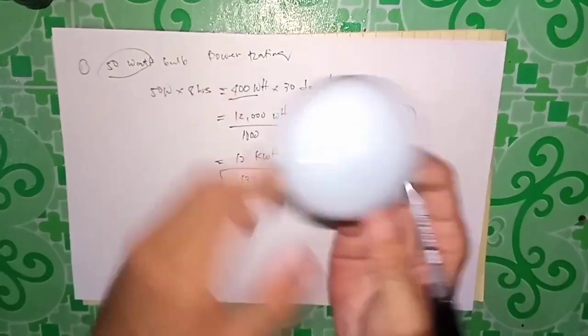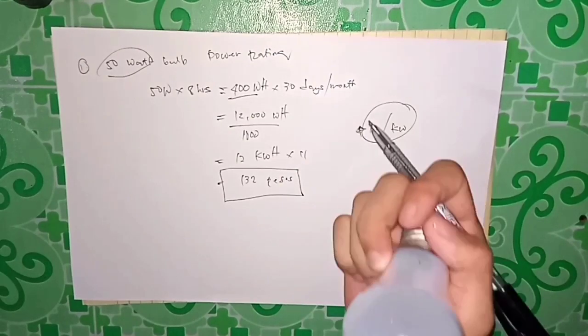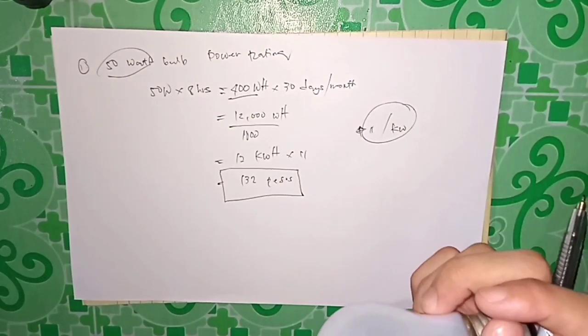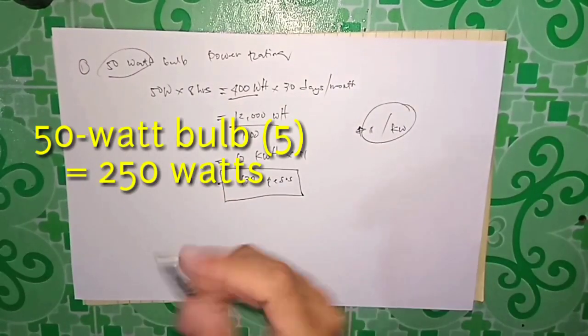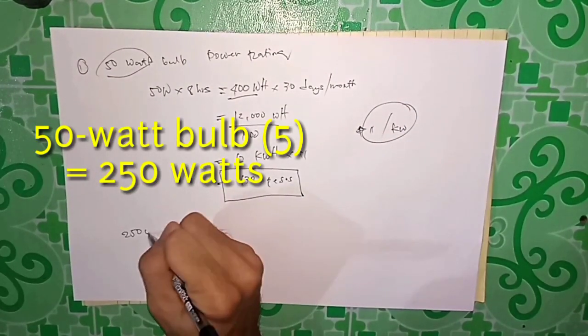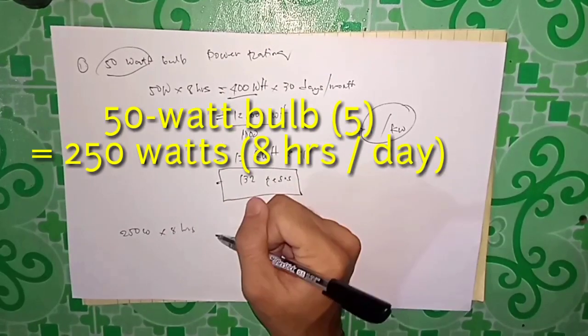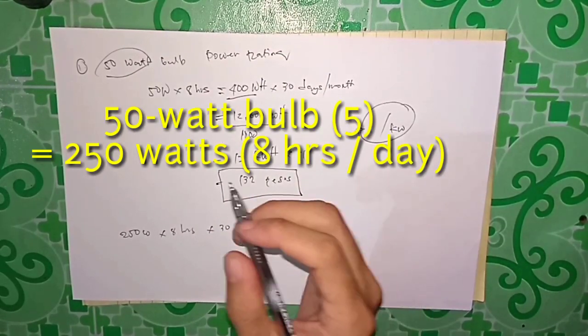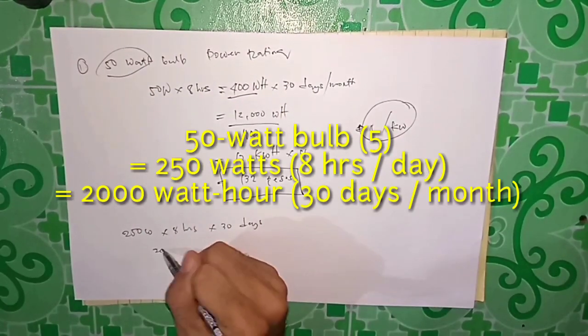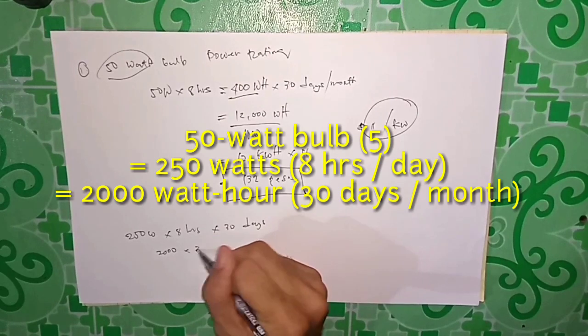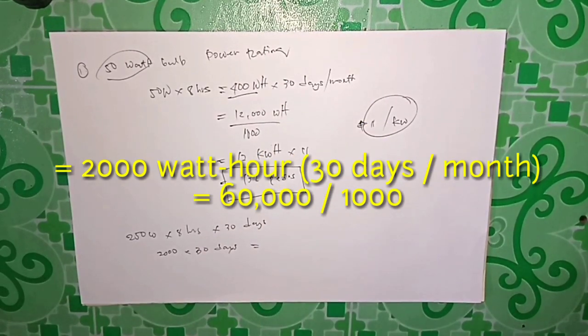That's just for a 50 watt bulb. What if you use 5 fifty watt bulbs? 50 times 5 is 250 watts, times 8 hours, times 30 days. 250 times 8 is 2,000, times 30 days equals 60,000.